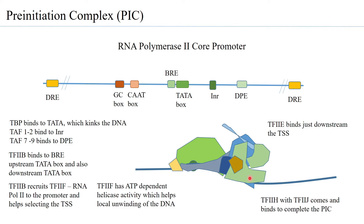The binding of TF2H actually completes the formation of the pre-initiation complex. However, that does not mean initiation begins immediately — a few steps have to be carried out by components of the pre-initiation complex. Currently, when all the general transcription factors are assembled, they are forming what is called the closed complex.